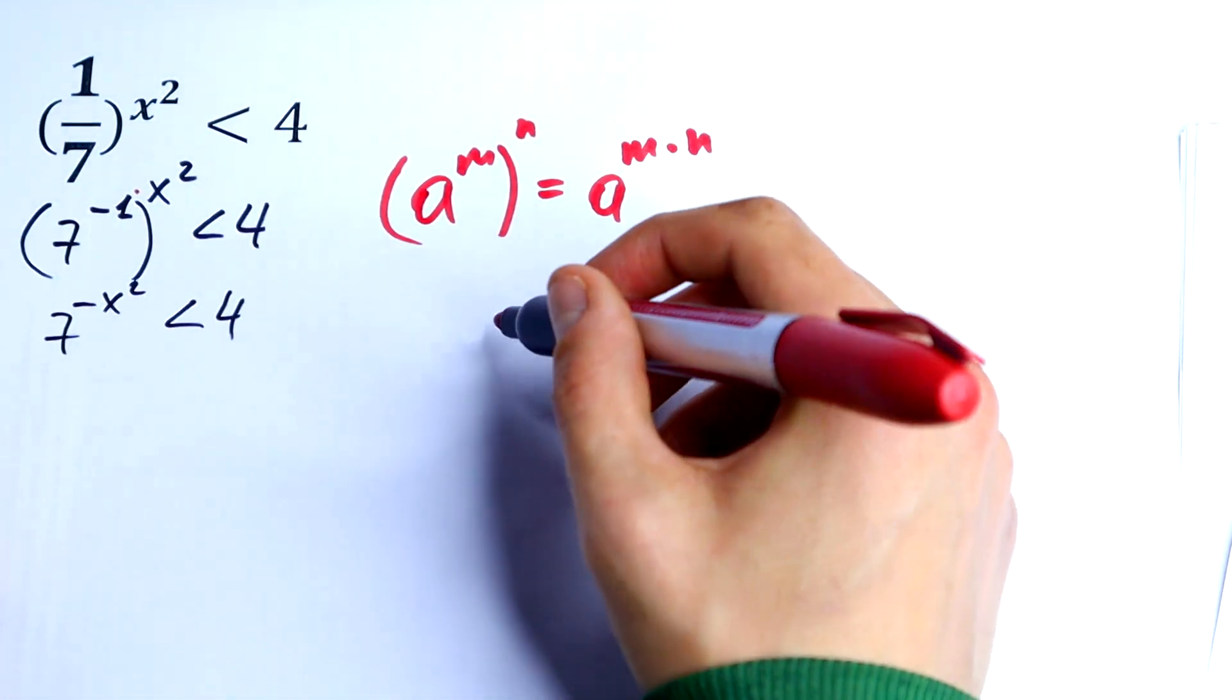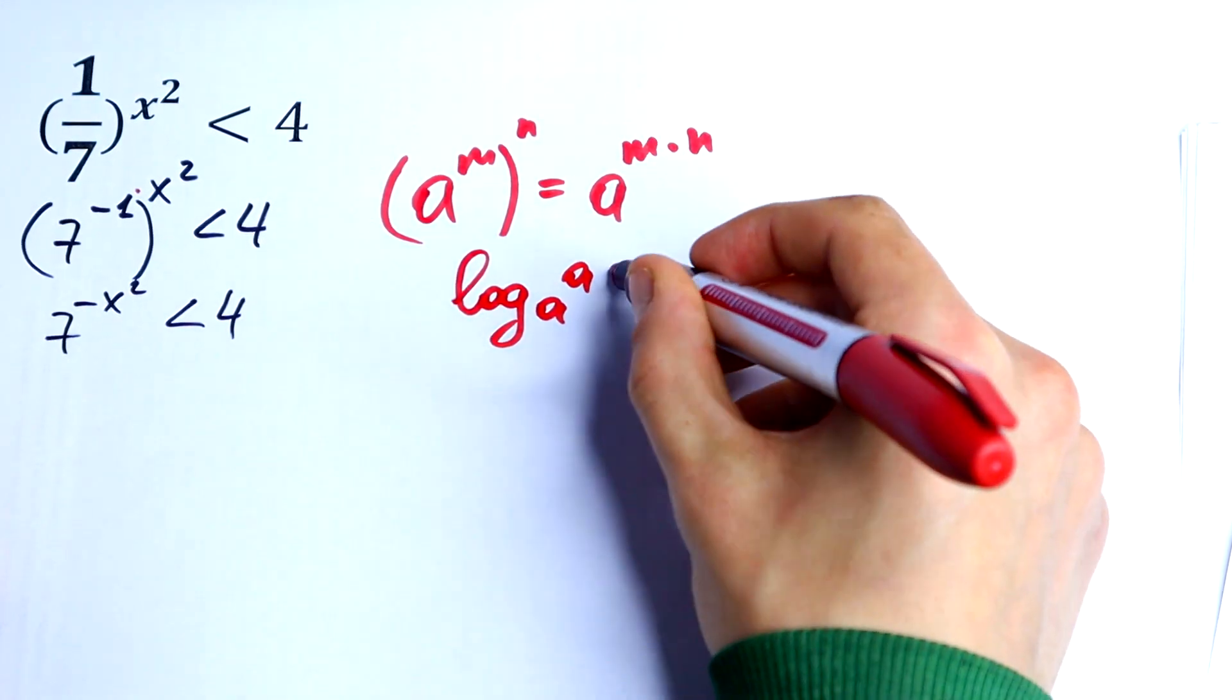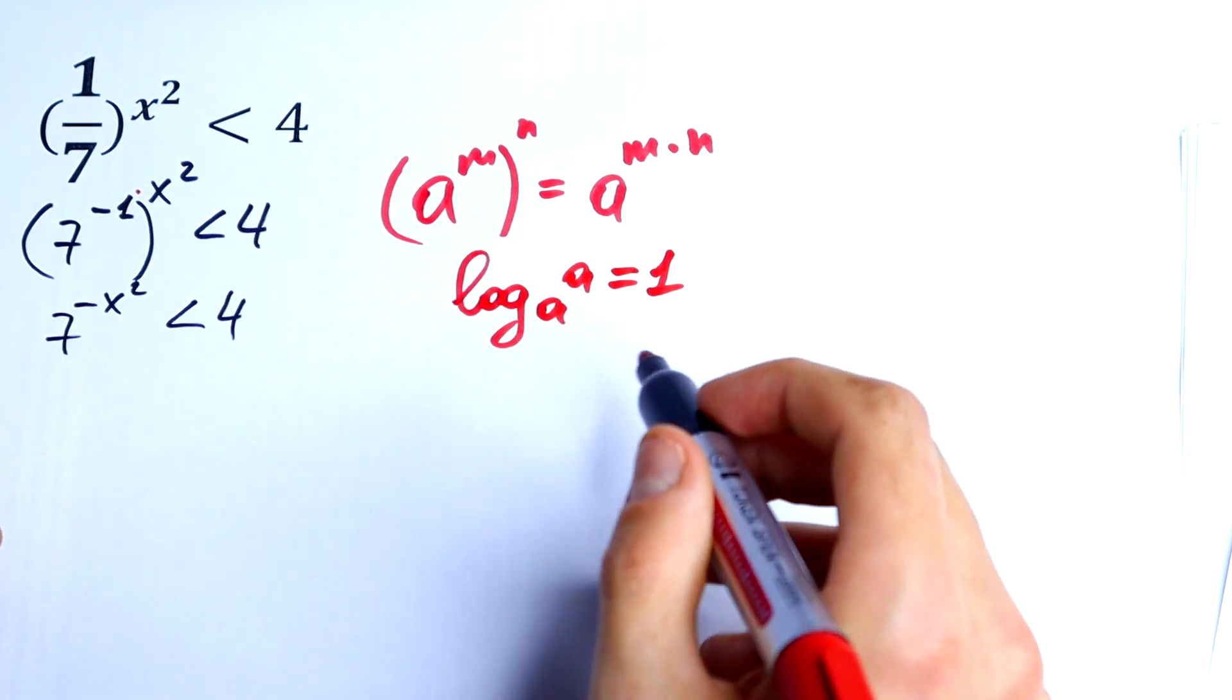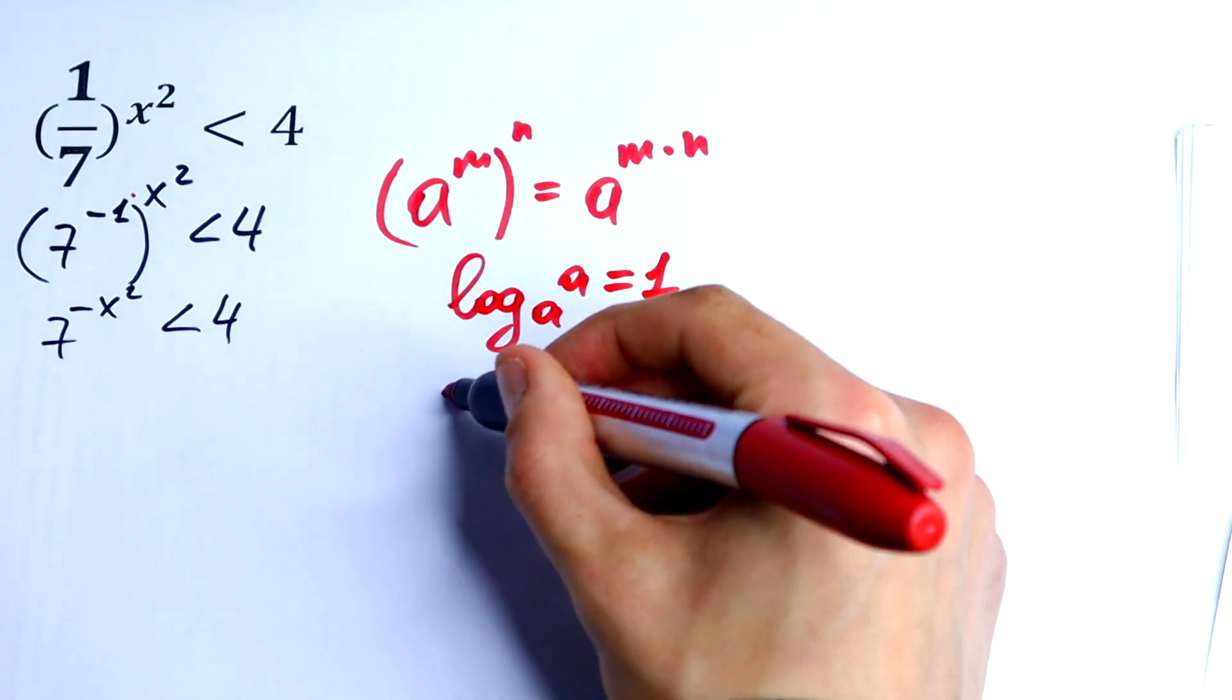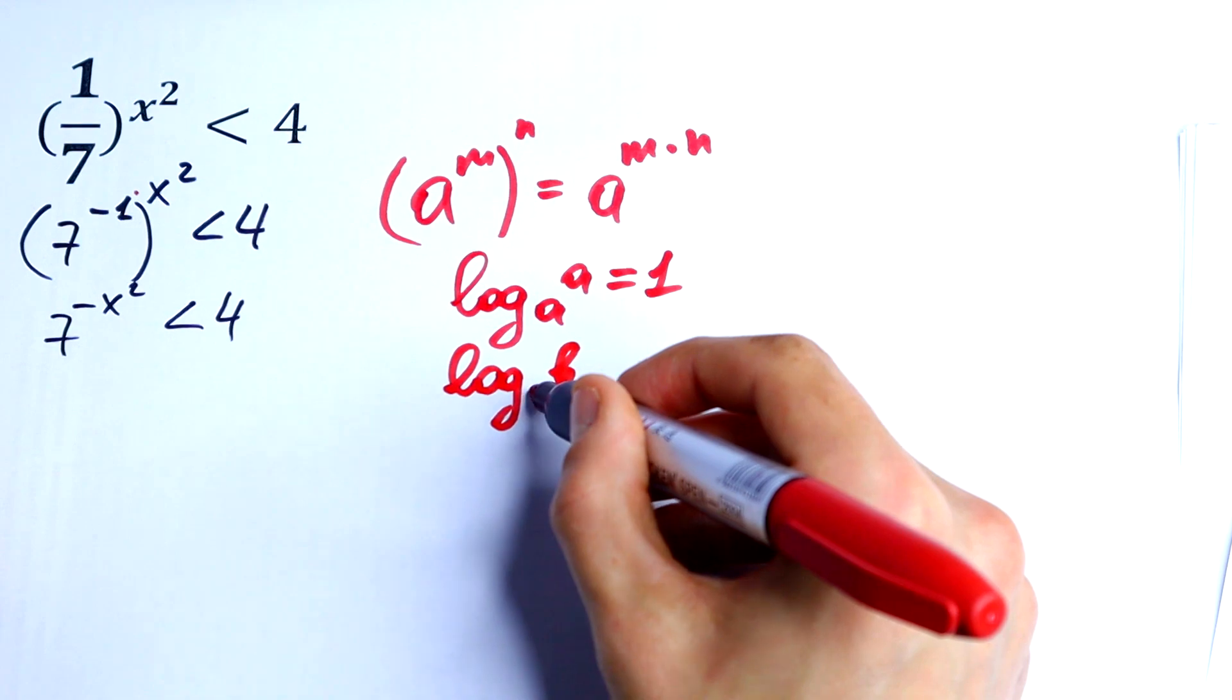So, we know that log base a of a would be equal to 1. And the second rule we need is log base a of b.